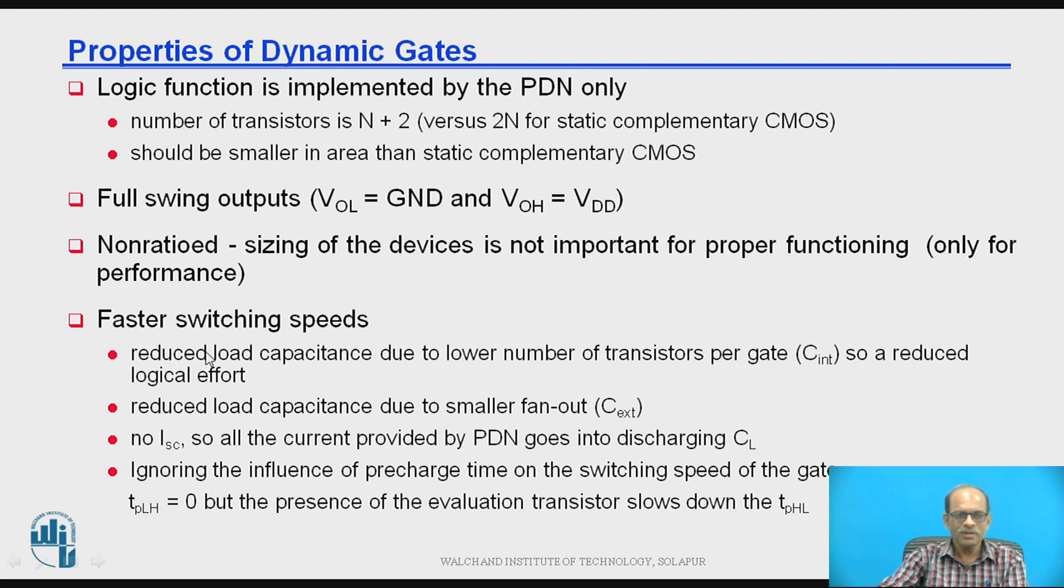Now next property is the faster switching speeds. Now reduced load capacitance due to lower number of transistors per gate. Then reduced load capacitance due to smaller fan-out. Now ignoring the influence of the pre-charge time on the switching speed of the gate, so TPLH equal to 0 but the presence of evaluation transistor slows the TPHL. So for the discharge path that evaluation transistor comes in series that will affect the TPHL.